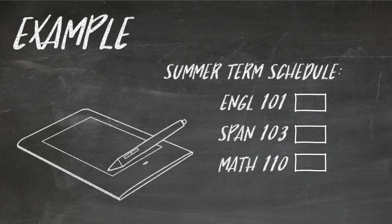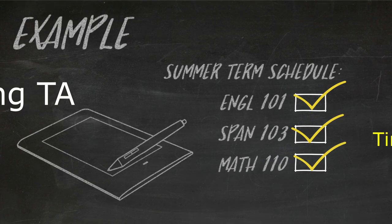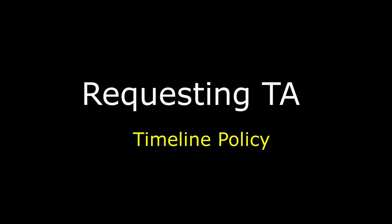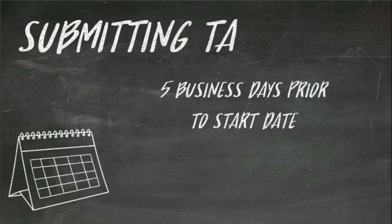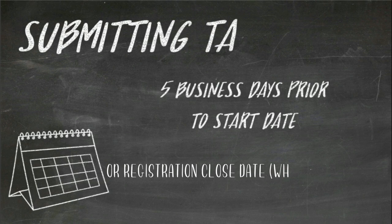For example, if you are taking English 101, Spanish 103, and Math 110, there must be 1 TA Request for English 101, 1 TA Request for Spanish 103, and 1 TA Request for Math 110. Requests must be submitted to GoArmyEd.com 5 business days prior to the course start date or registration close date, whichever is first.